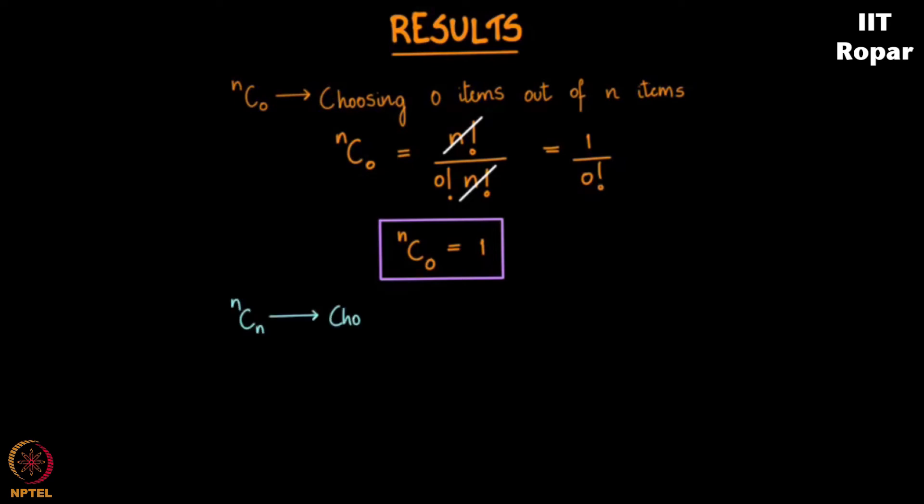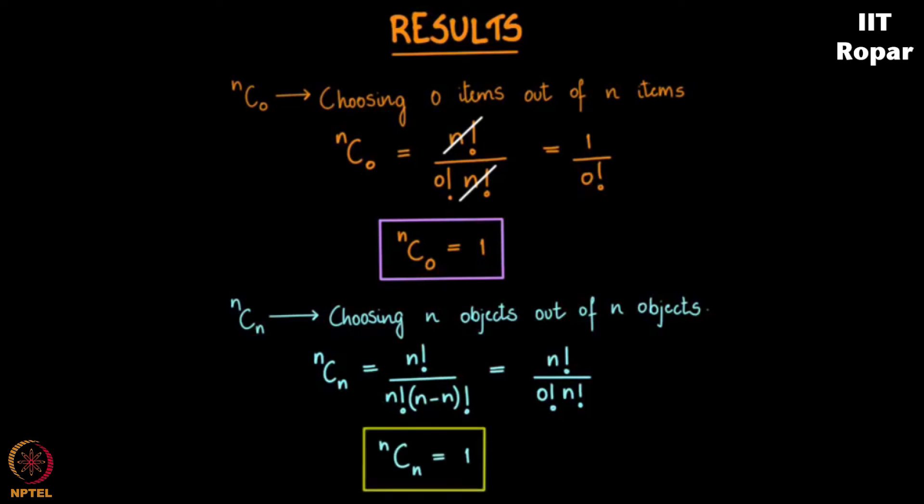nCn is choosing n objects from n objects. In how many ways can we do this? With the formula, it is n factorial by n factorial into n minus n factorial, which is the same as n factorial by 0 factorial into n factorial. This is again 1, as we have seen in the previous result. So there is one way in which you can choose all the n objects from the given n objects.